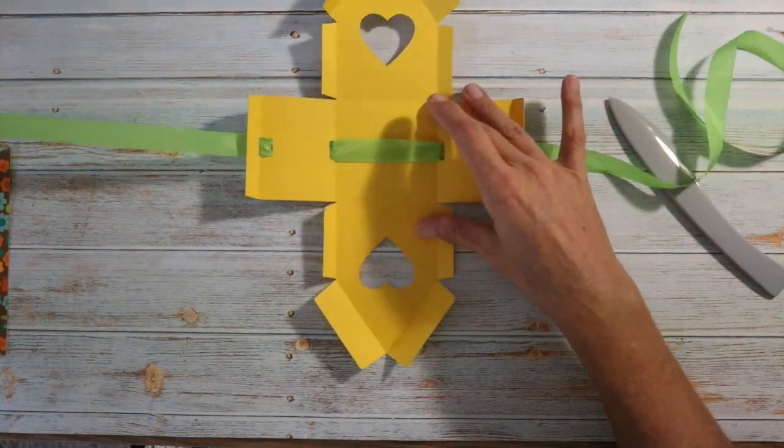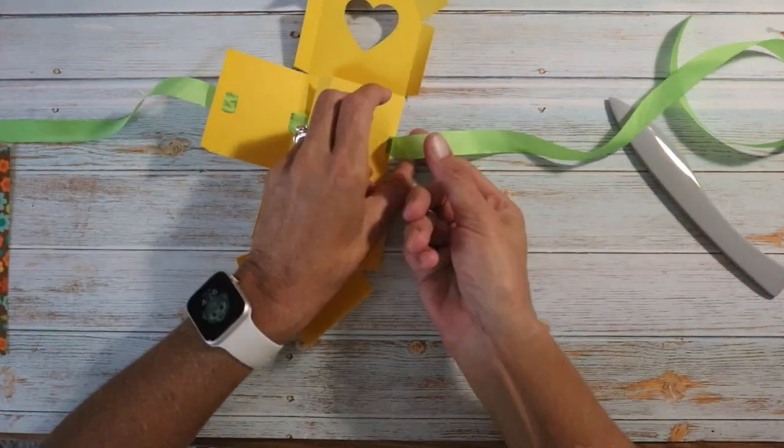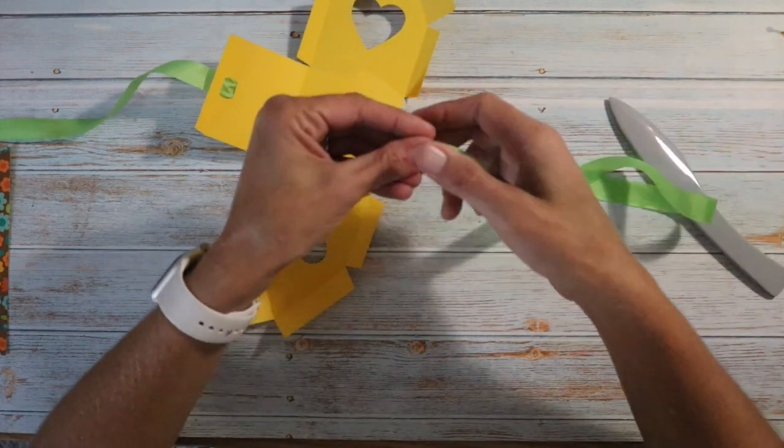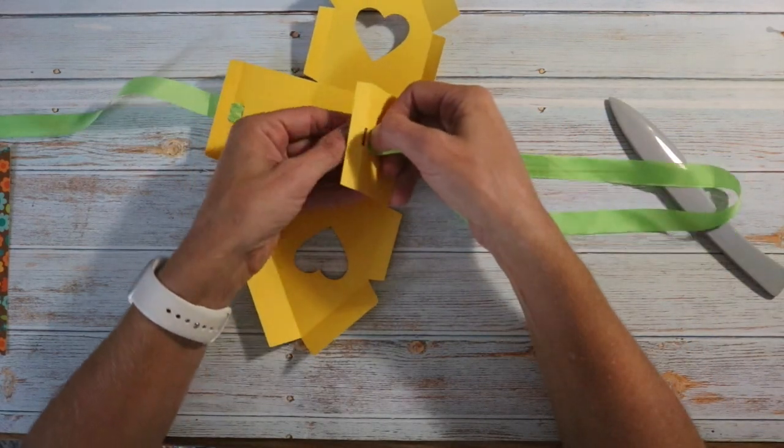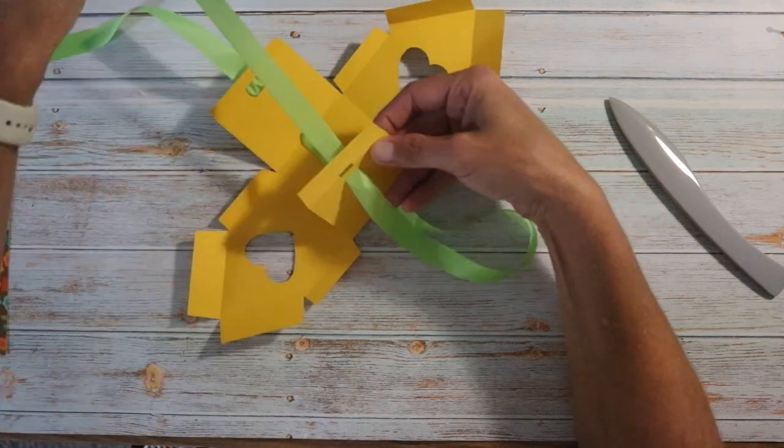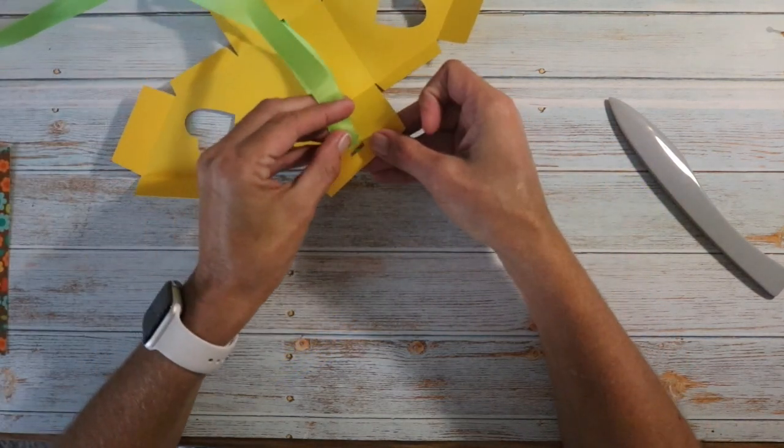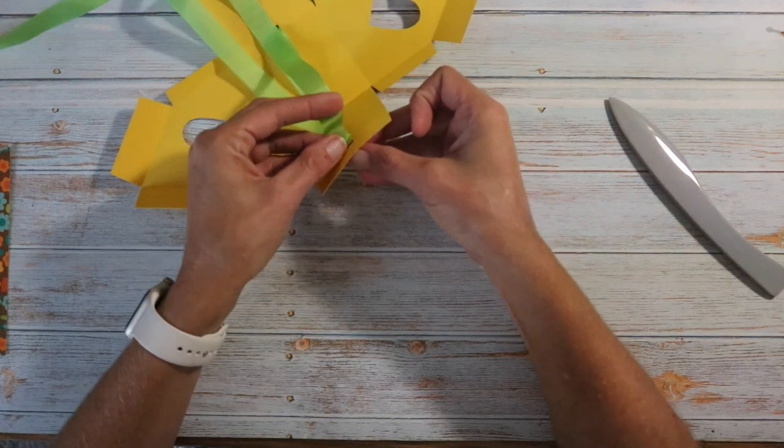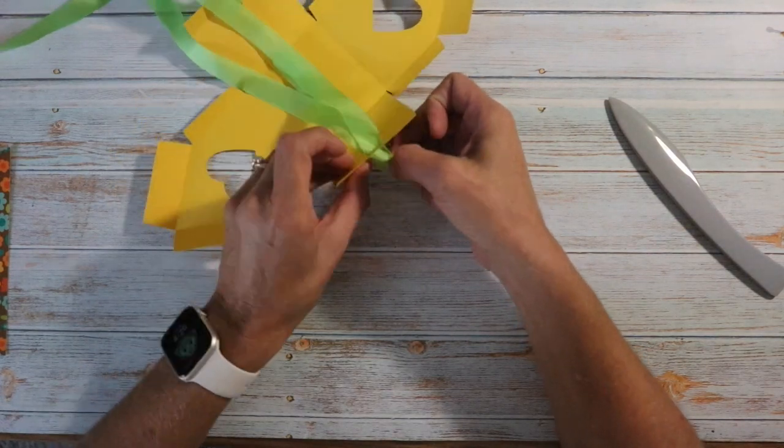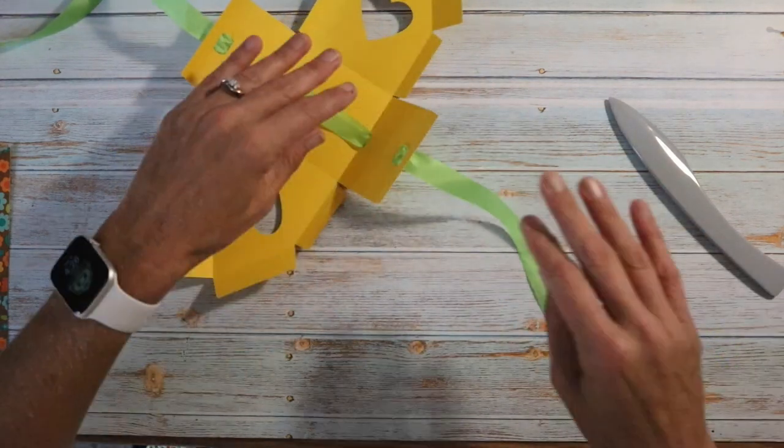Again, just make sure your ribbon is not twisted up. Do the same thing on this one. So take this end, go in the second one, and then through this one. All right, so we have those done.